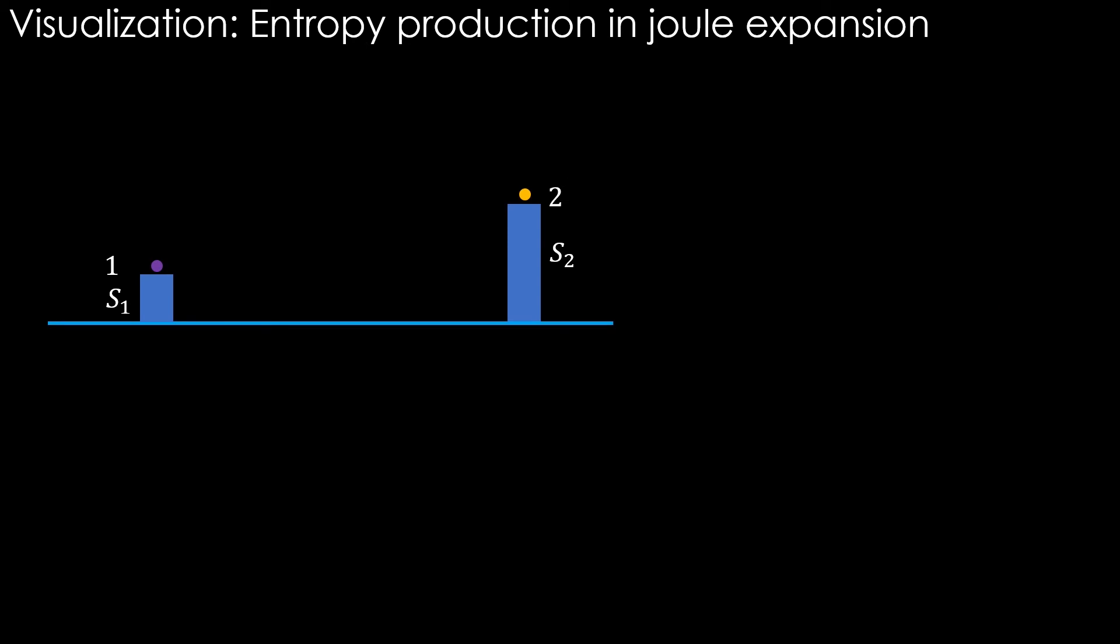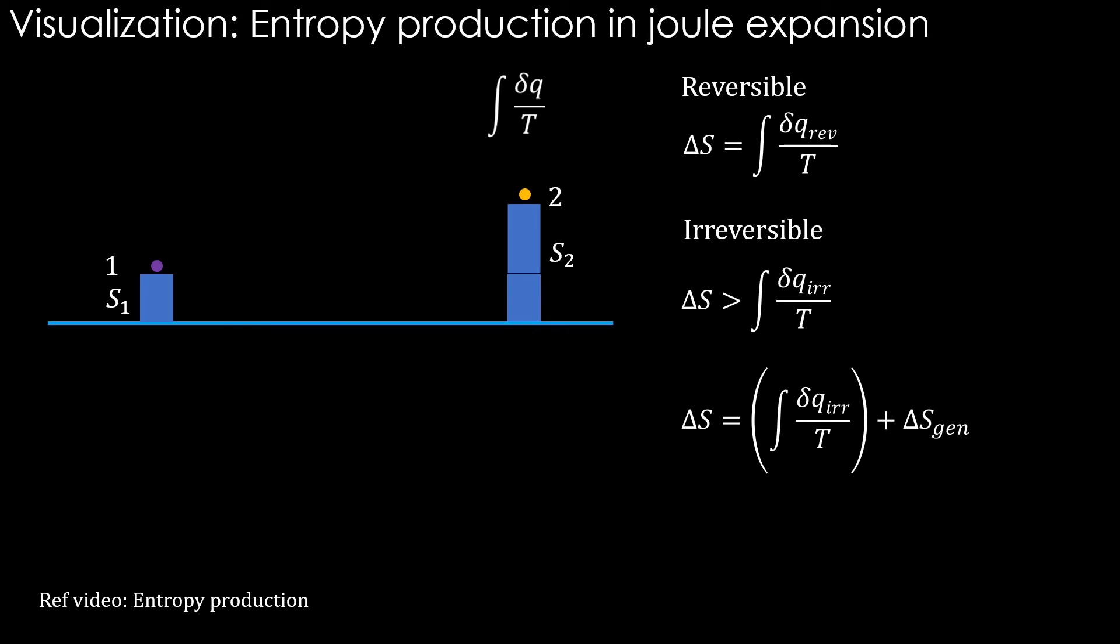Let's see a visualization. We have two states with entropy values s1 and s2 respectively. If we move from state 1 to 2 reversibly, then the entropy change is exactly equal to the integral δq divided by T. We have seen in the video on entropy production that when the change is done in an irreversible manner, then the entropy change is higher than integral δq divided by T, and an additional term is required which is entropy produced.